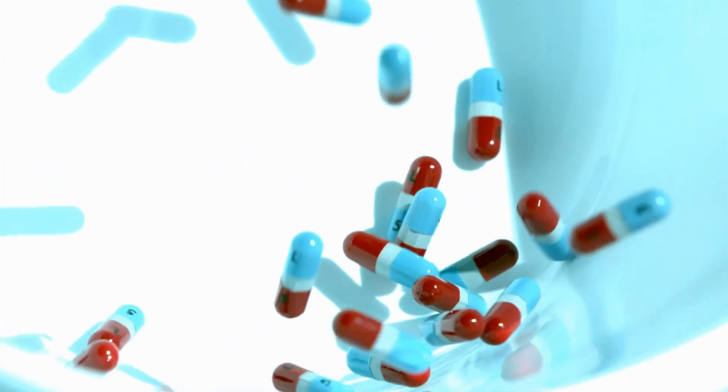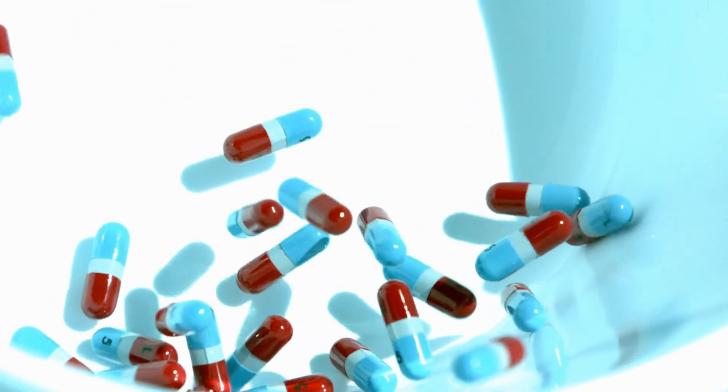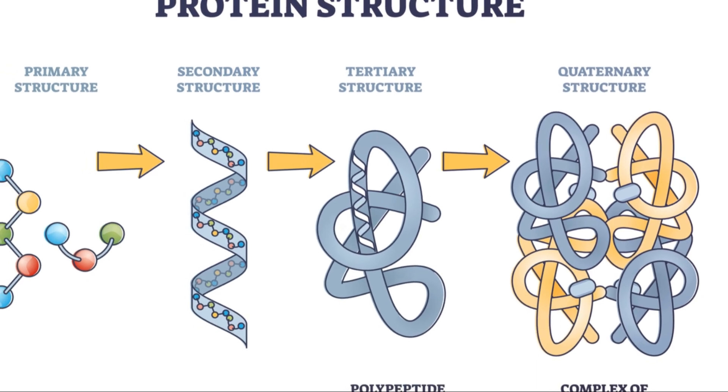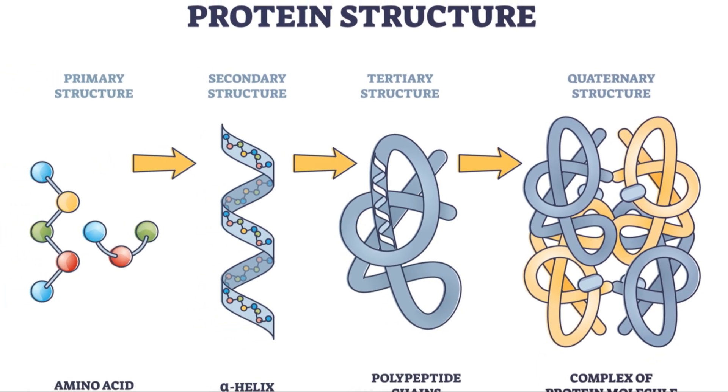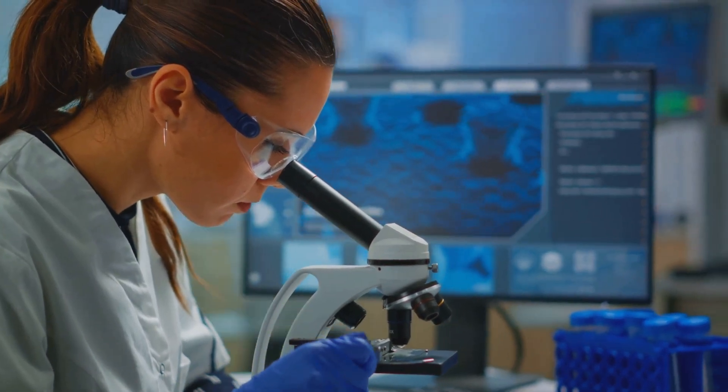AlphaFold2's process resembles assembling a jigsaw puzzle, recognizing sequences, connecting small clusters of amino acids, and then forming larger structures. This was not just incrementally improving the accuracy of previous methods, but shattering previous benchmarks.